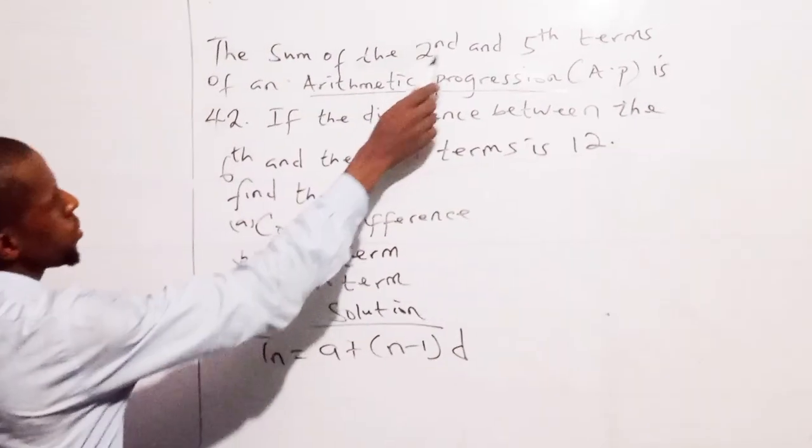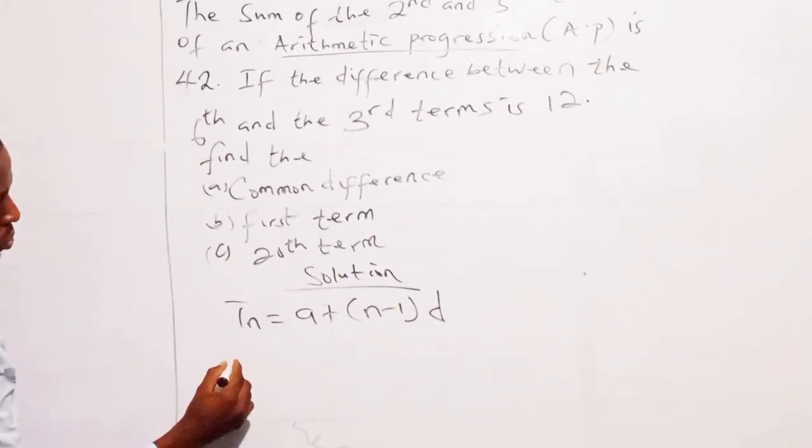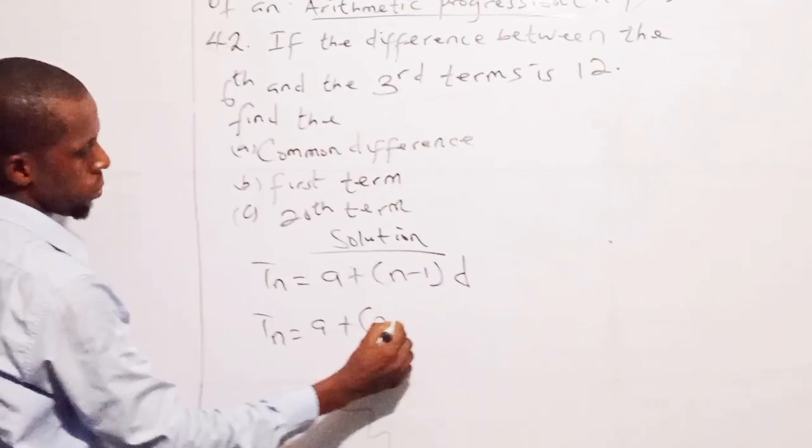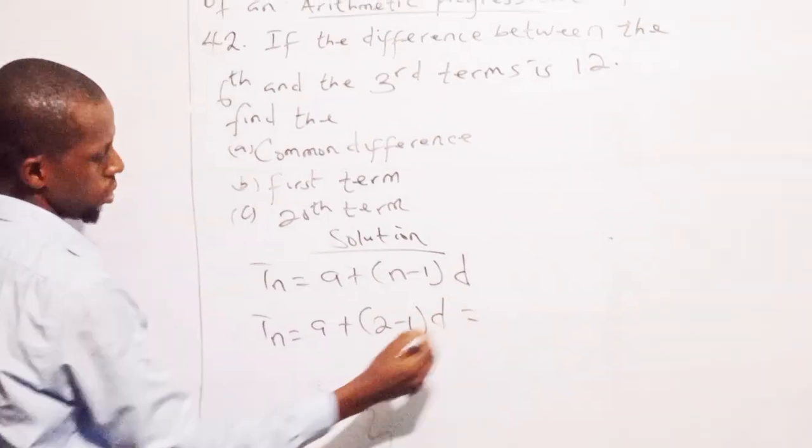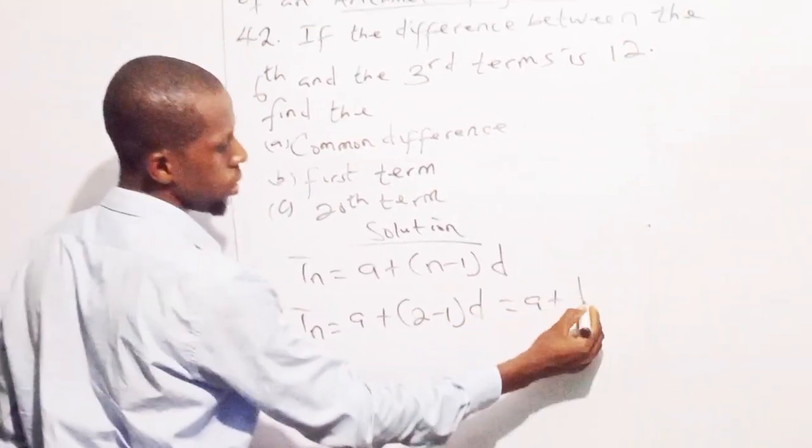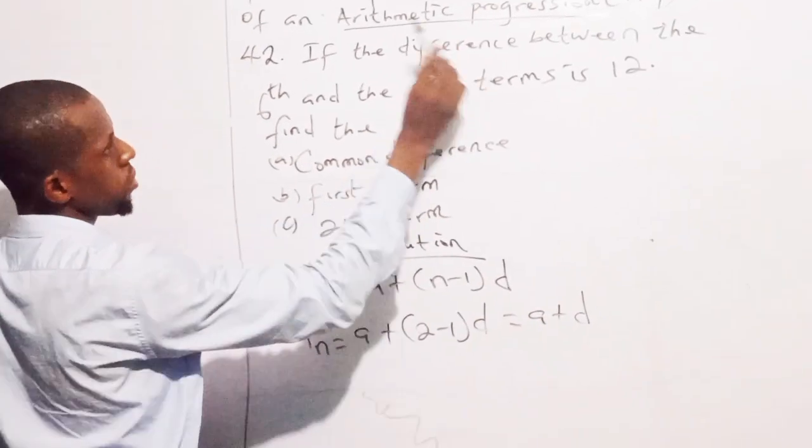So the second term now, I'm following this. So my second term will be, my first term is already given plus 2 minus 1, D. So this gives me A plus, 2 minus 1 is 1 times D, A plus D. So that's our second term.